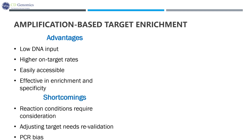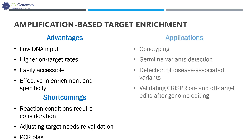On the other hand, this approach can sometimes be difficult to optimize reaction conditions with regard to multiplex amplicons. In addition, adjusting the targets needs revalidation, and PCR bias can influence the outcome. Amplicon sequencing is used for genotyping by sequencing and for the detection of germline SNPs, indels, and known fusions. It is particularly suited to the detection of disease-associated variants, as well as validating CRISPR on- and off-target edits after genome editing.